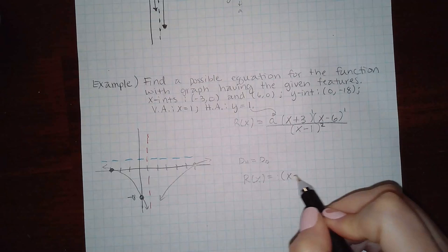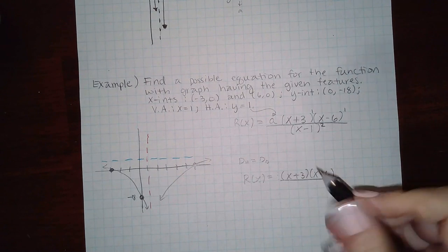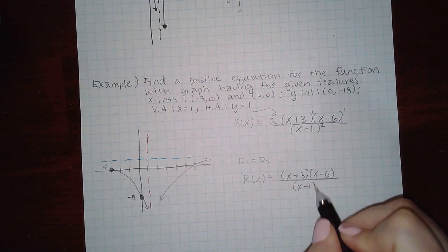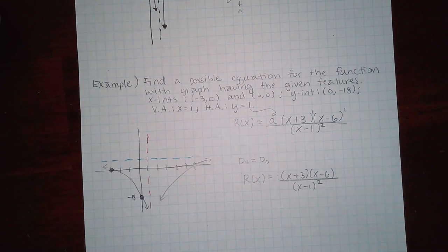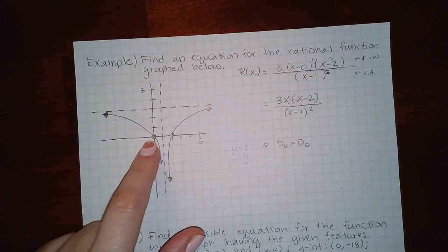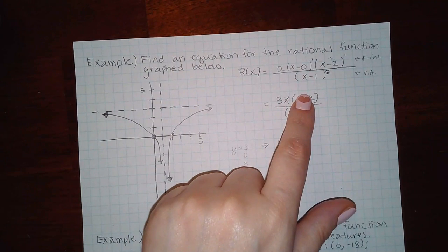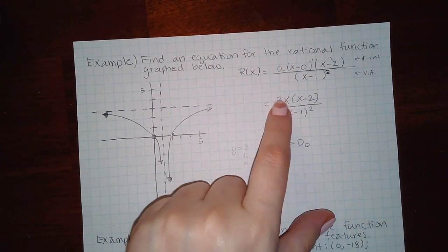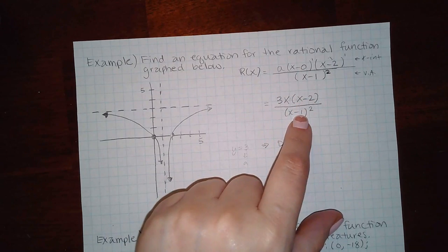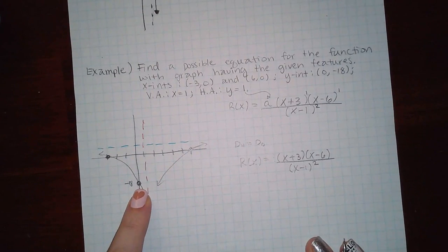Now I know what my function looks like. It'll just have a one which I don't have to write, x plus three, x minus six, over x minus one squared. You can always double check using your y-intercepts. Here my y-intercept is zero. What happens if I plug in zero for all the x's? I get zero times this over this. Zero times anything is zero, or anything is still zero, and that is the y-intercept.